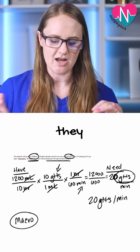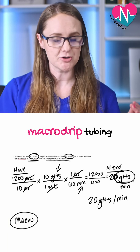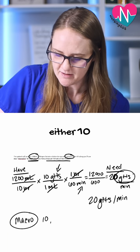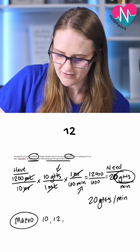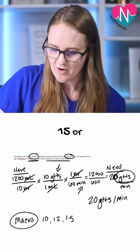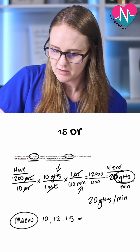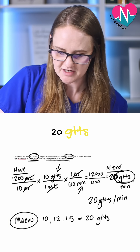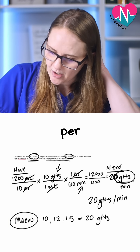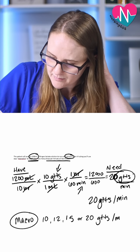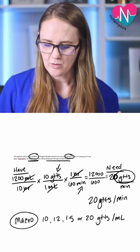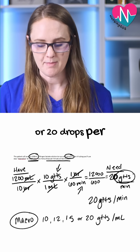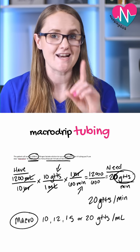When you get a question that says they are using macro drip tubing, that could be either 10, 12, 15, or 20 drops per mil. So 10, 12, 15, or 20 drops per mil — that is for macro drip tubing.